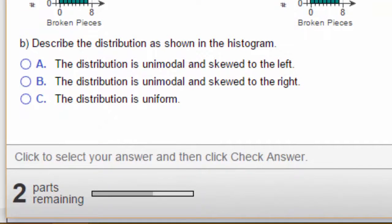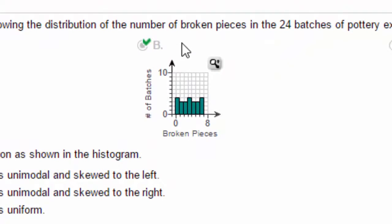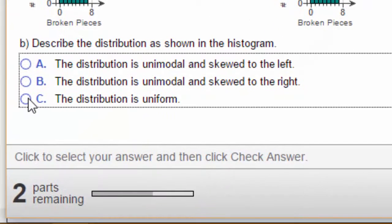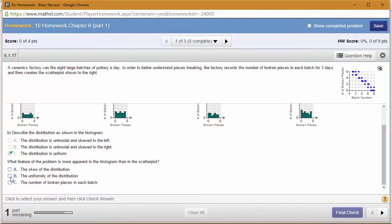Describe the distribution as shown in the histogram. Well, the histogram is very uniform. Shape, center, spread—that is how we describe a histogram: shape, center, spread.